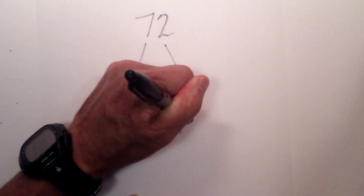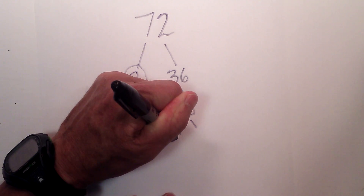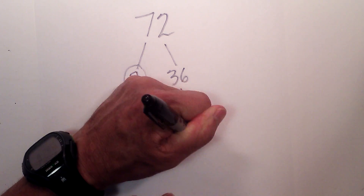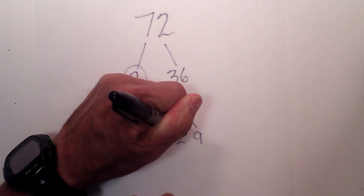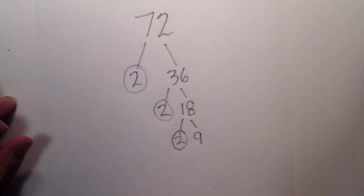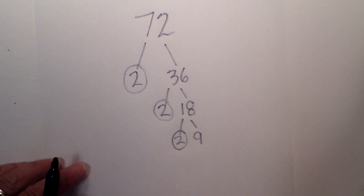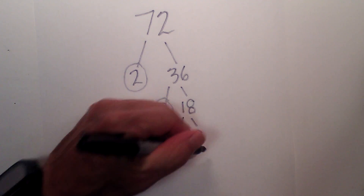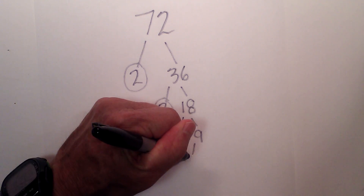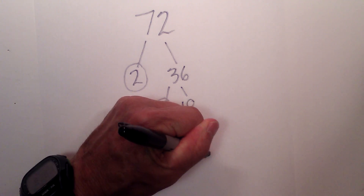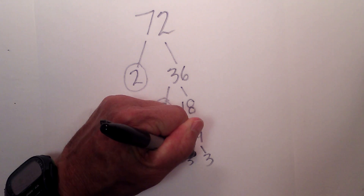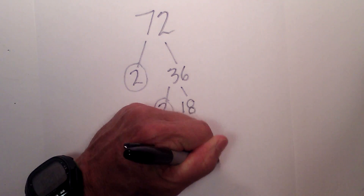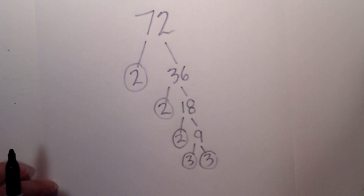Now 2 times 9 equals 18. I will circle the 2 because it is prime. And then finally, 3 times 3 is equal to 9. I will circle both of them because they are prime.